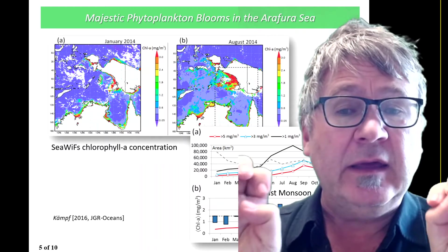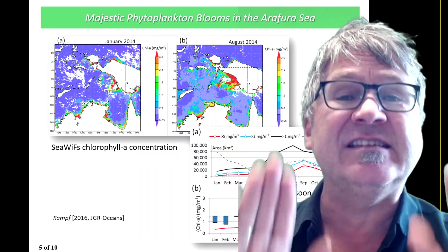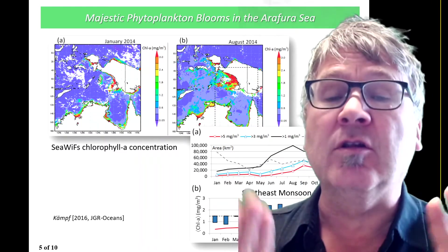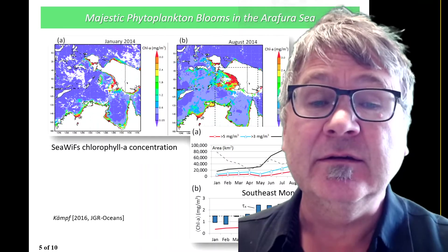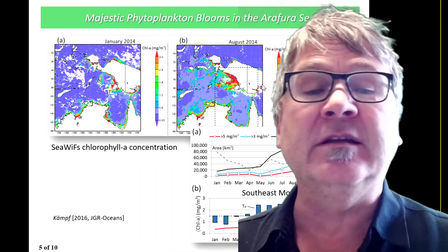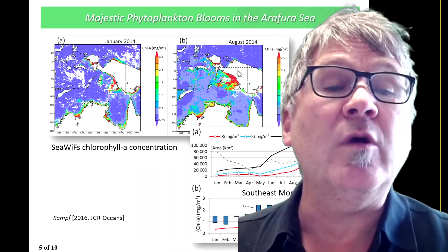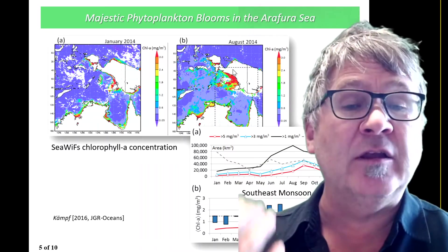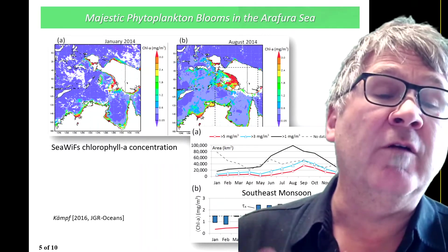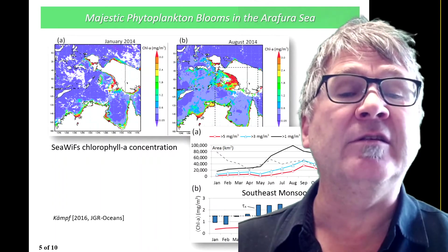Here is the Arafura Sea, and every year there is a seasonal coastal upwelling system developing. You can see it when you look at chlorophyll-A satellite data. It's shown here in August for the year 2014, as one example. This is the northwestern Arafura Sea. You can see the red areas — most of that region actually develops a plankton bloom. The value of chlorophyll-A is about 3 milligrams per cubic meter; that's the maximum value you get.